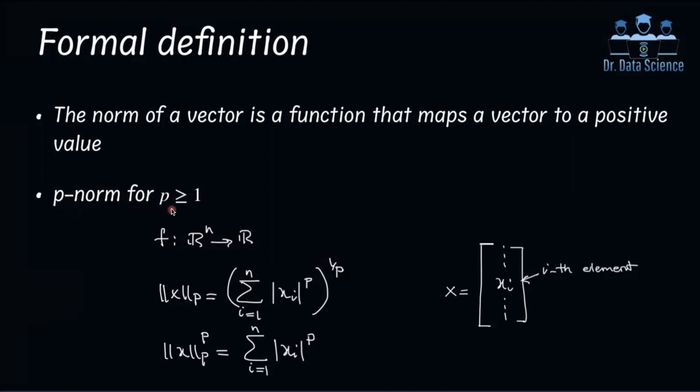So let's say you have a vector x that has n elements, and I use this i here for indexing to show the i-th element of this vector. In this case, this P-norm, which is a function as we just mentioned, takes an n-dimensional object or vector and produces a real valued number. So how this mapping or how this function works is given using this formula that we have here.